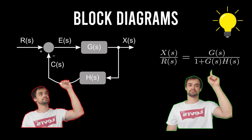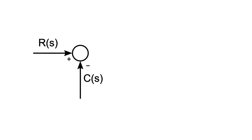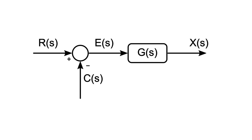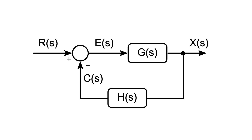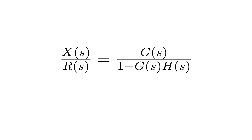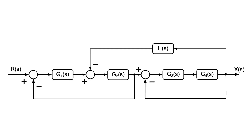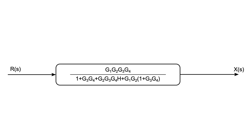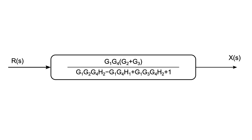In this tutorial I will teach you about block diagrams and how to handle inputs like R(S), feedback like C(S), the error term E(S), the transfer function G(S) and X(S) from the last tutorial, and the feedback transfer function H(S). I will explain the closed-loop transfer function and together we will go over two examples, showing how to bring systems into standard form.